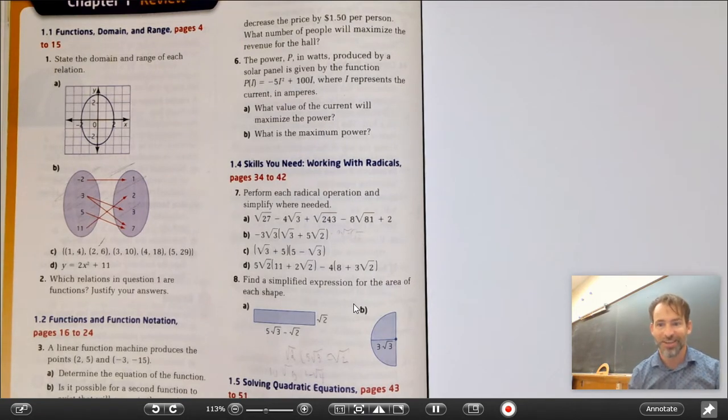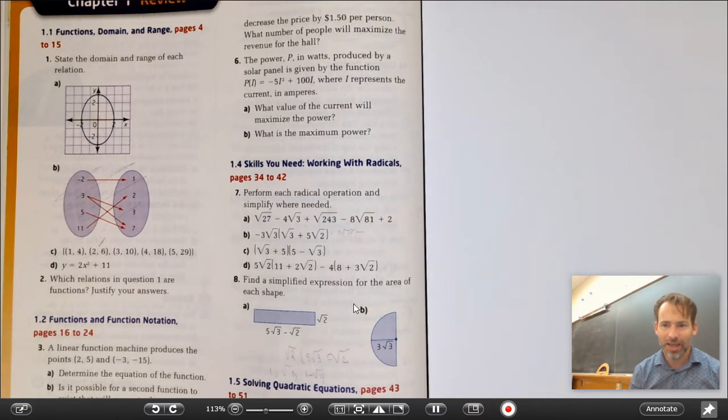The domain refers to all the possible inputs, all the possible x values, and that might be important if you're looking at a situation like a car starts driving and goes at a constant speed. We know that's going to create a line, or also we have this notion of it starts driving—it wasn't driving at negative time, it was just going now.